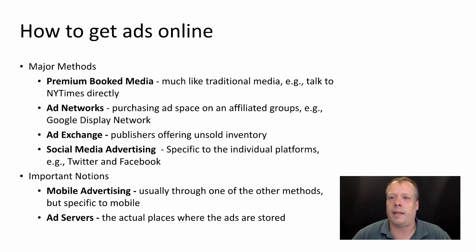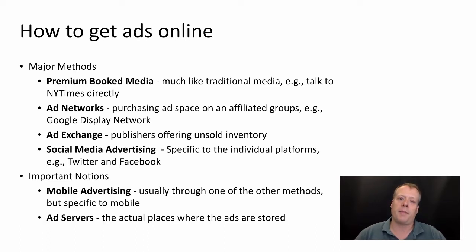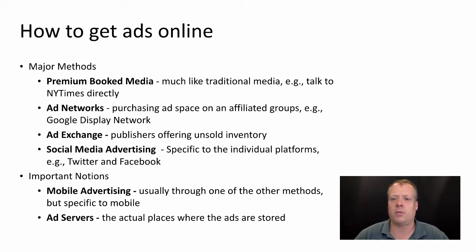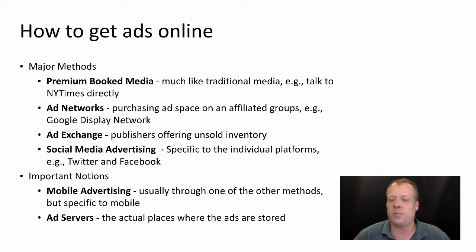Now that we've discussed the different ways to pay for advertisement, how do you actually get those ads online? There are several major methods. First, there is premium book media, which is much like how you would book a traditional newspaper ad. Usually you'd hire an ad agency rather than directly approaching the publisher, but you can imagine going to the New York Times directly, saying you'd like to put an ad on their space — you buy a certain amount of space and put it up there.